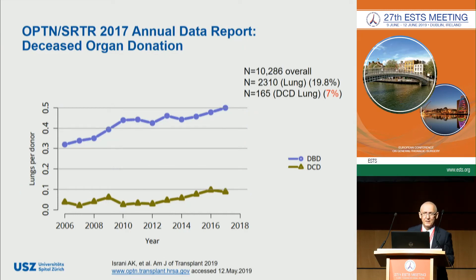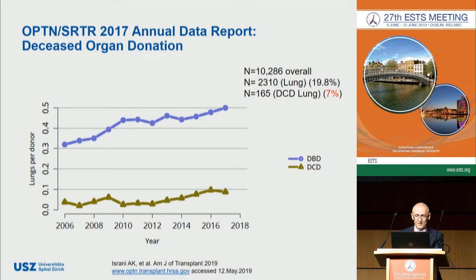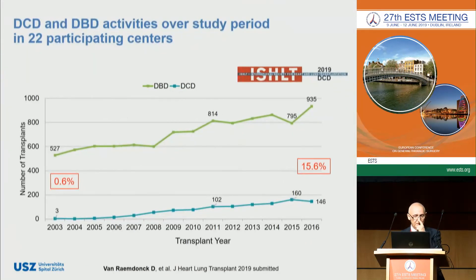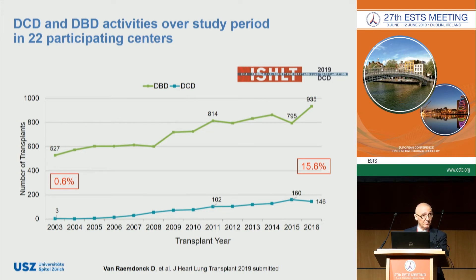Although countries like the United Kingdom, Australia, Belgium, and the Netherlands have reached a high percentage of DCD donors, a continuous global underutilization is noted. In 2018, the Organ Procurement and Transplantation Network reported that only 7% of transplanted lungs came from DCD donors. Referring to the latest ISHLT registry report, DCD activity increased from 1% in 2003 to approximately 16% in 2016 — it is increasing, but still not at the level we want to see.